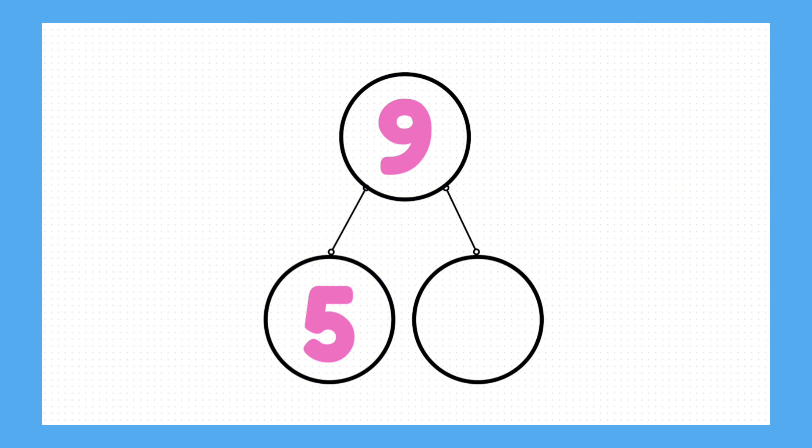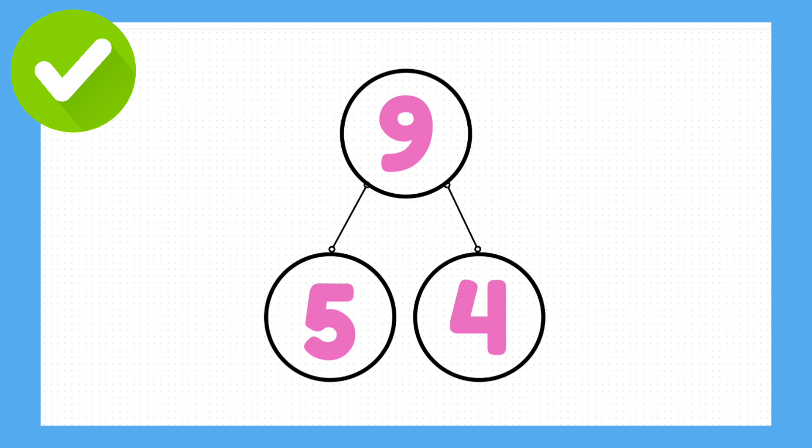For a starter question, let's try this. If a part-whole model shows that 5 is one part, and the whole is made up of 9, what is the other part that we are missing? The answer is 4. Did you get that right?